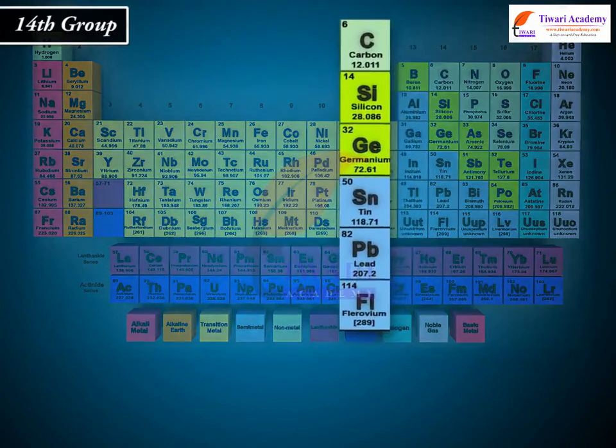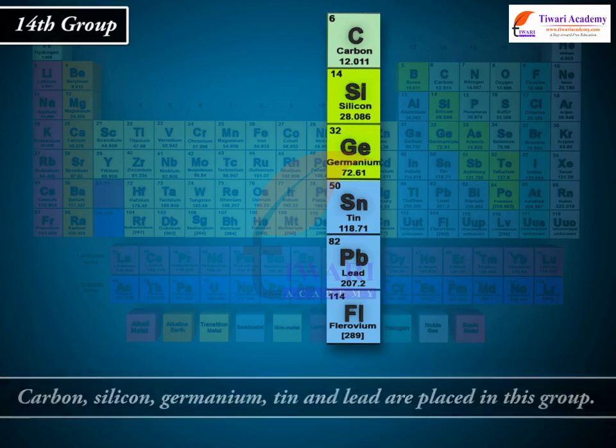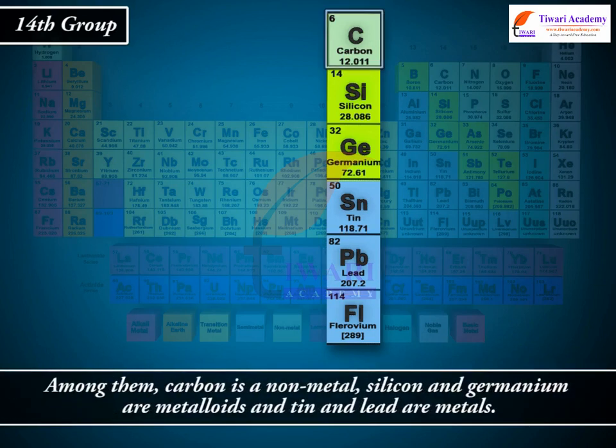In the 14th group, Carbon, Silicon, Germanium, Tin and Lead are placed. Among them, Carbon is a non-metal, Silicon and Germanium are metalloids, and Tin and Lead are metals.